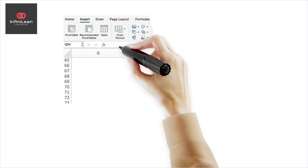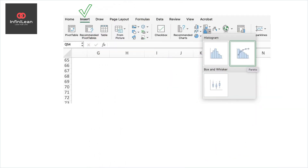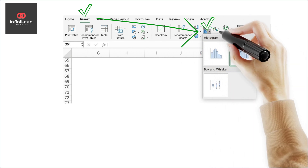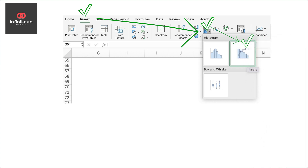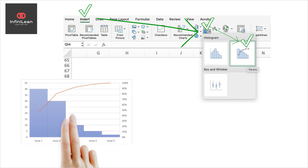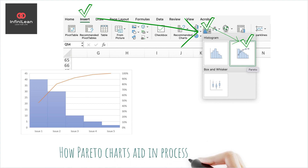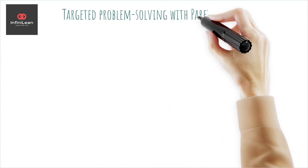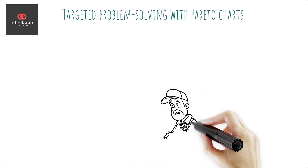When you plot these categories on a bar graph and overlay the cumulative percentage line, you have your Pareto chart. Understanding the Pareto chart is crucial in process improvement — it helps teams focus on the vital few causes rather than getting bogged down by the trivial many. This efficient prioritization allows for targeted problem-solving, resulting in faster and more effective improvements.